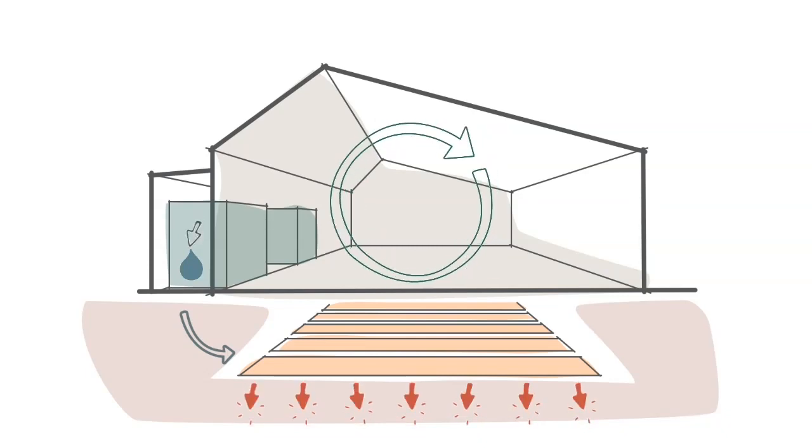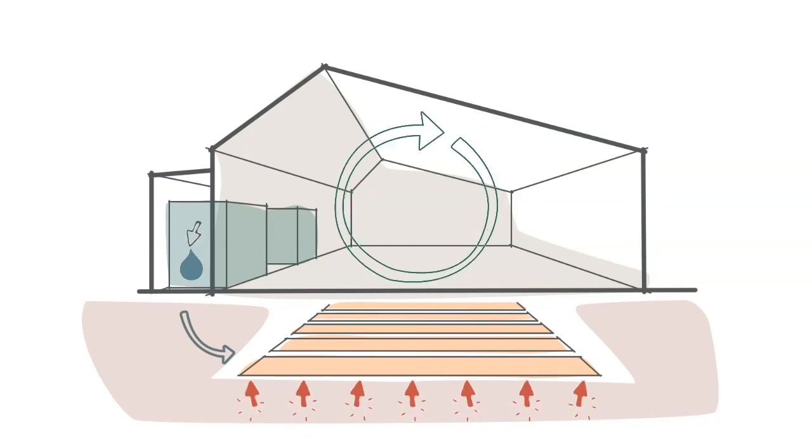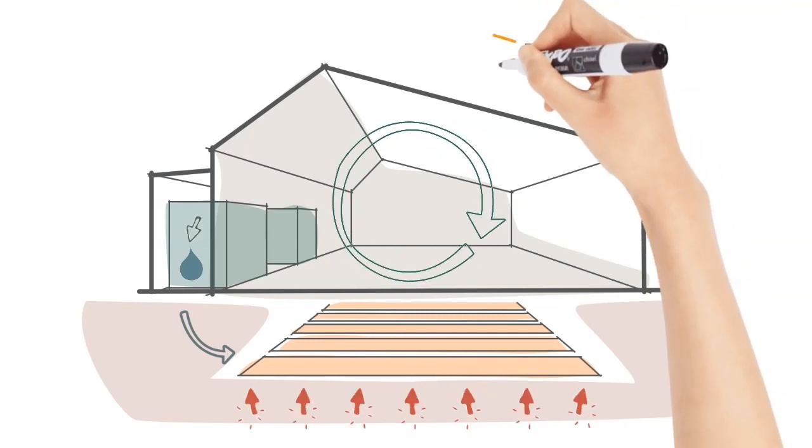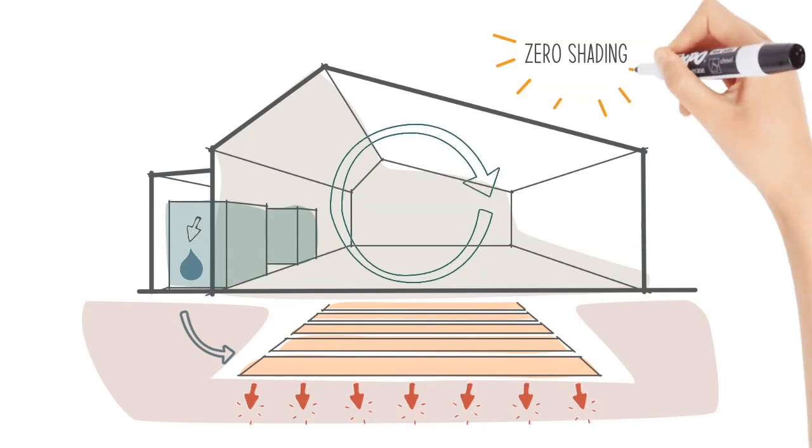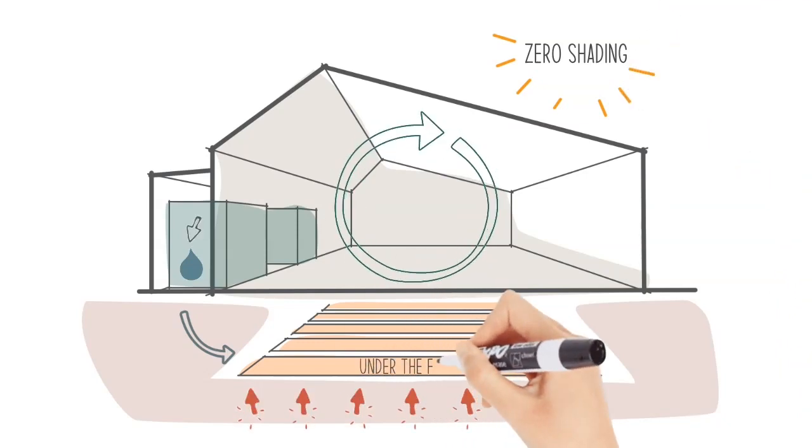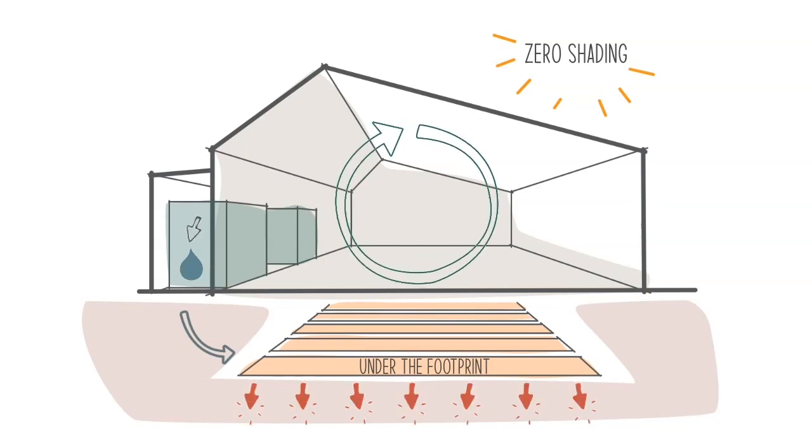But what are the major benefits of the Ecoloop exactly? It creates zero shading and occupies no space inside the greenhouse, allowing significantly more sunlight for plants. The mats are buried under the footprint of the building so they don't require outdoor space.